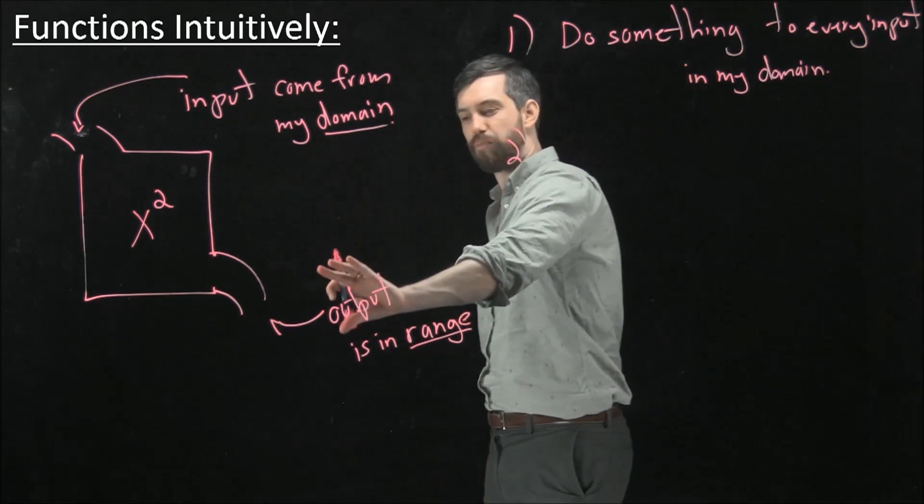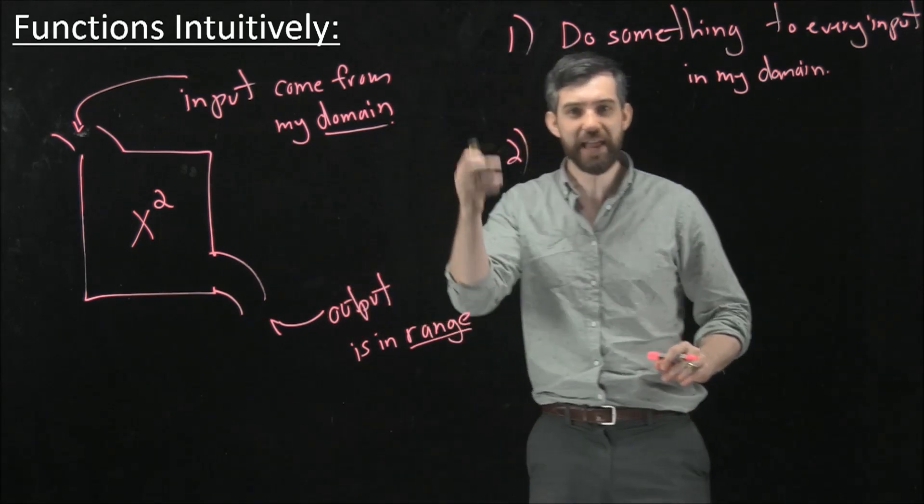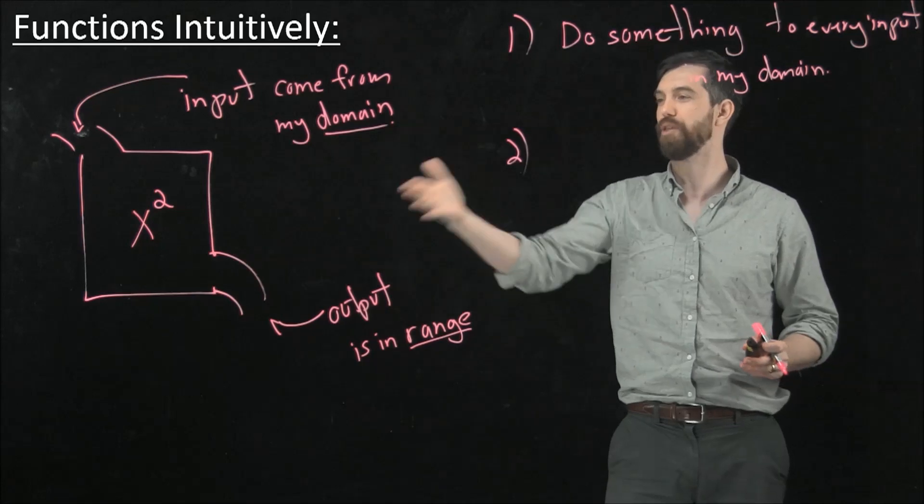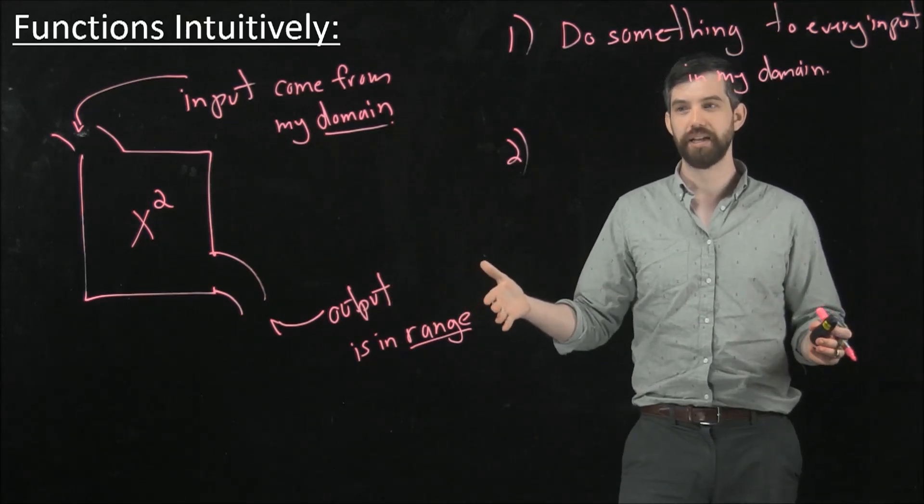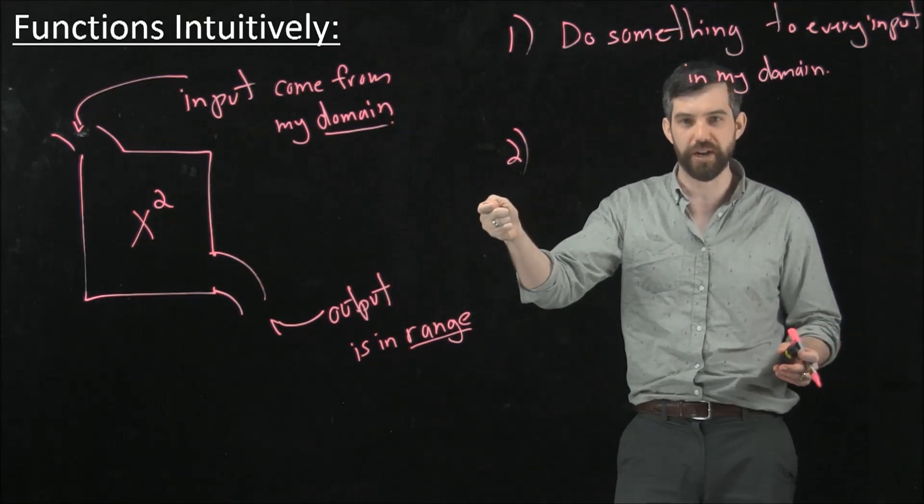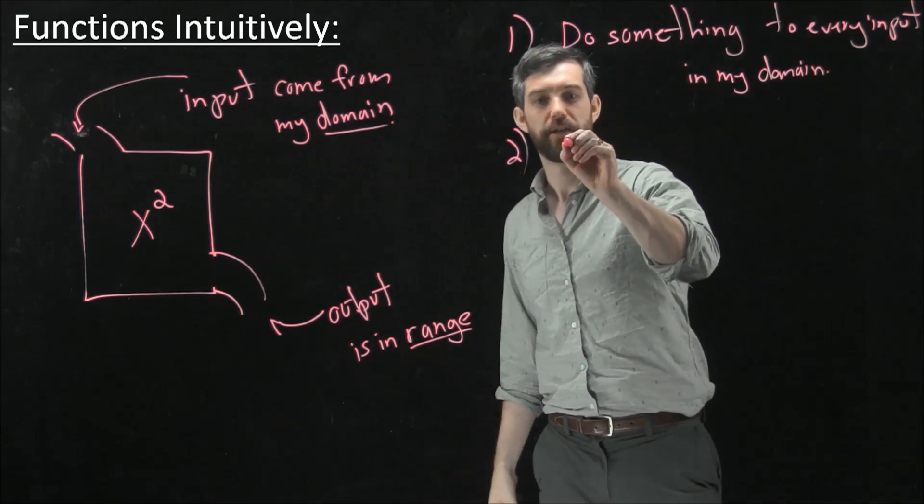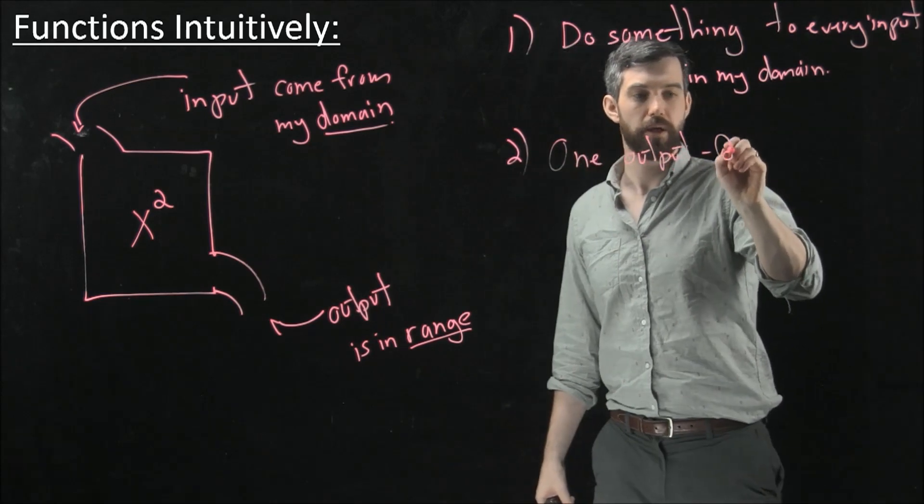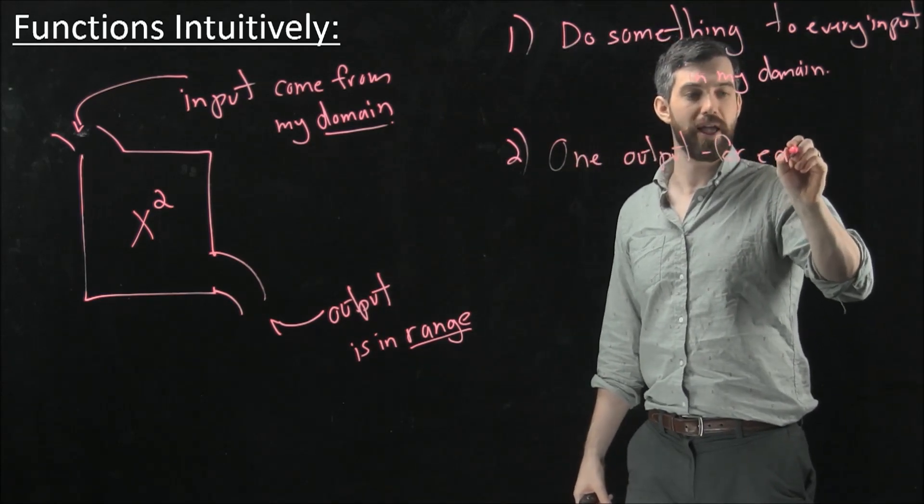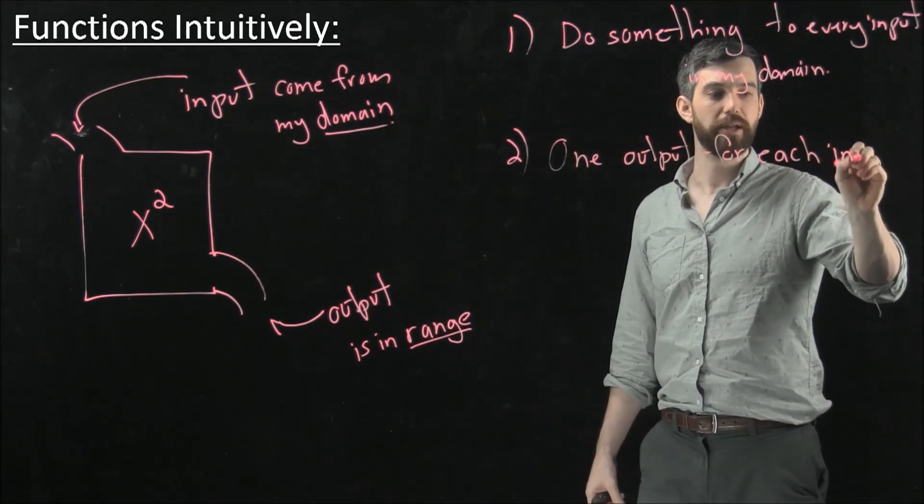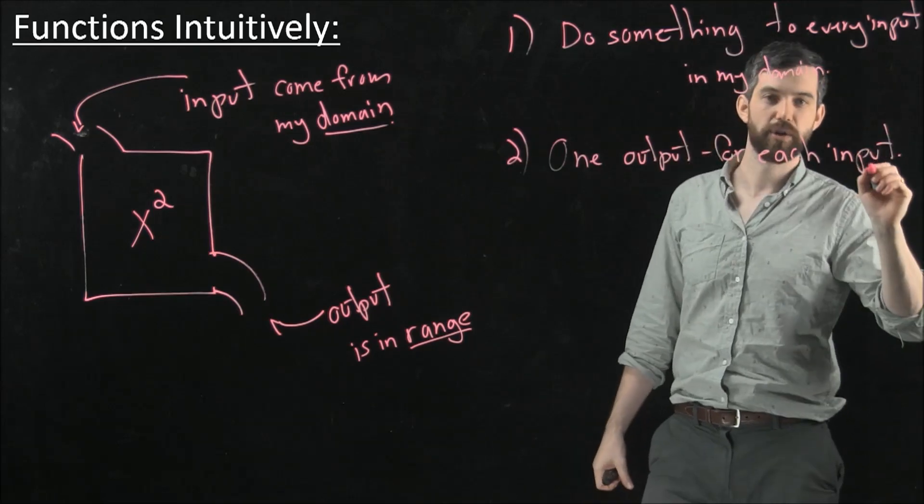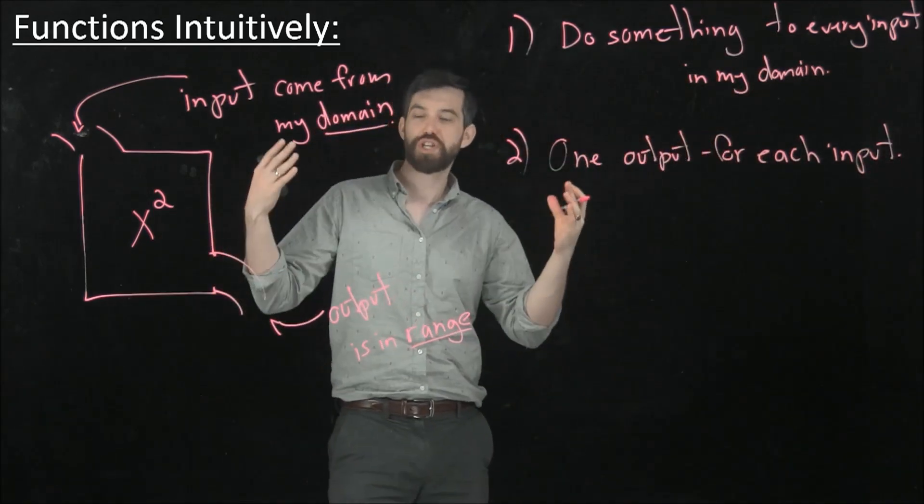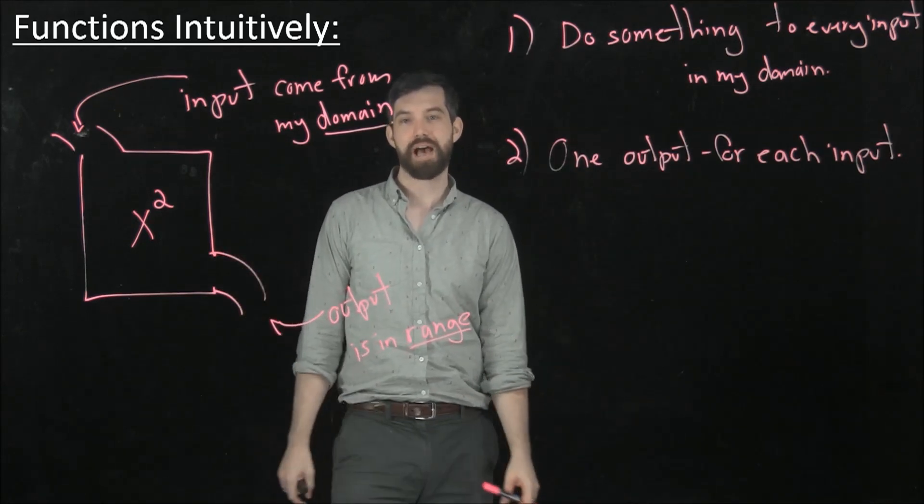And then the second property is that it does the same thing. If you keep on feeding it the number 2, it'll always spit out the number 4 and never anything else. So there's only this one output for every input. So I'm going to write that there is one output, and this is true for every possible input. So one output for every single input. So those are my two intuitive ideas that I want to have in the notion of a function.